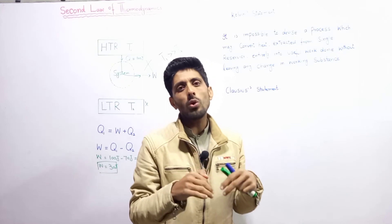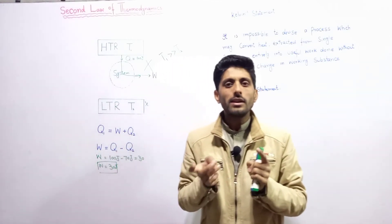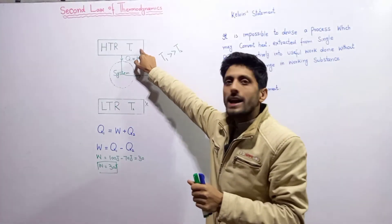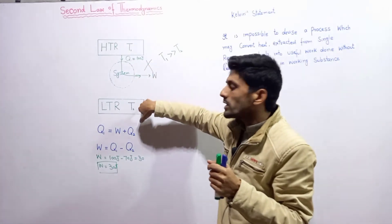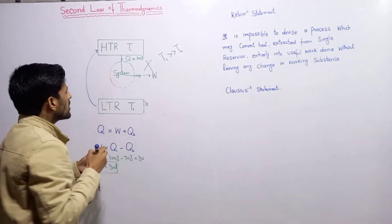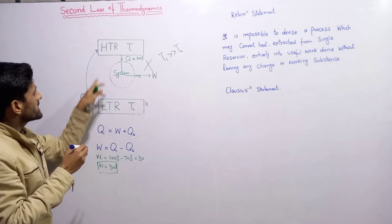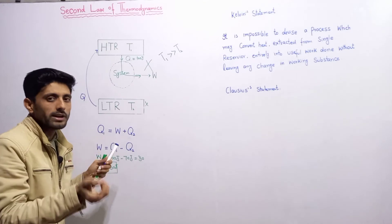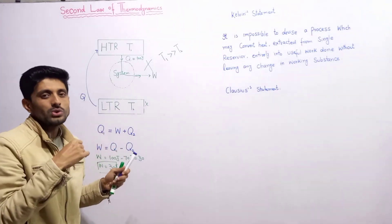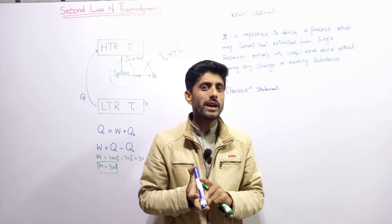According to the Clausius statement: it is impossible to flow heat from a cold body to a hot body without any external work done. Heat naturally flows from high to low temperature. If you want heat to flow from a low temperature reservoir to a high temperature reservoir, you must do external work on the working substance. By doing work, you can move heat from low temperature to high temperature — that is the principle of a refrigerator.